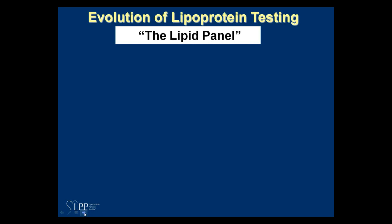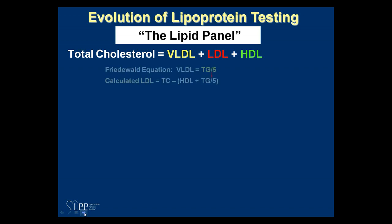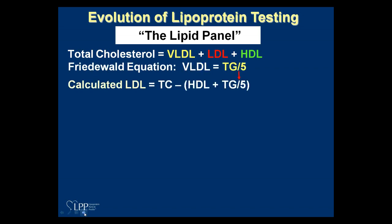I want to talk about the evolution of the lipid panel. Total cholesterol is the sum of VLDL, LDL, and HDL. When we do a calculated LDL, we take total cholesterol, subtract the HDL, and estimate the VLDL by taking a triglyceride value and dividing it by 5. Unfortunately for real people, that factor is somewhere between 2 and 10, so a calculated LDL is a pretty bad estimate in general. A direct LDL — which we run here at SpectraCell and is part of our standard lipid panel on every LPP — is a much better estimate of risk than this calculated value.